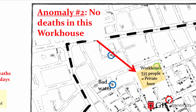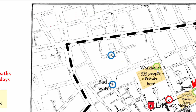The second anomaly: there was a workhouse with 535 people living in it, but no one there had died of cholera. It turned out that the workhouse had its own private bore, and they weren't using water from the Broad Street pump — they were using their own water. So of course, nobody had died.